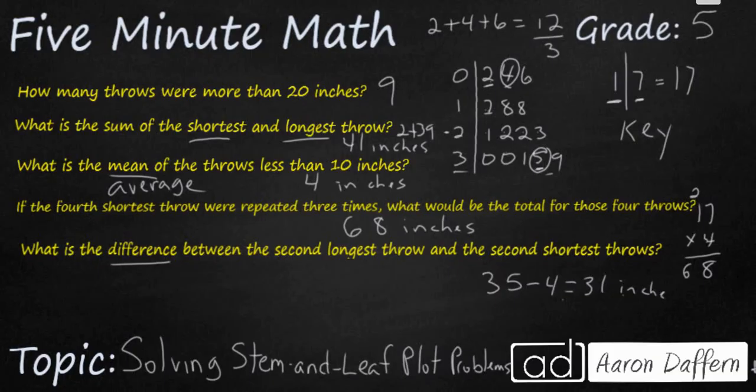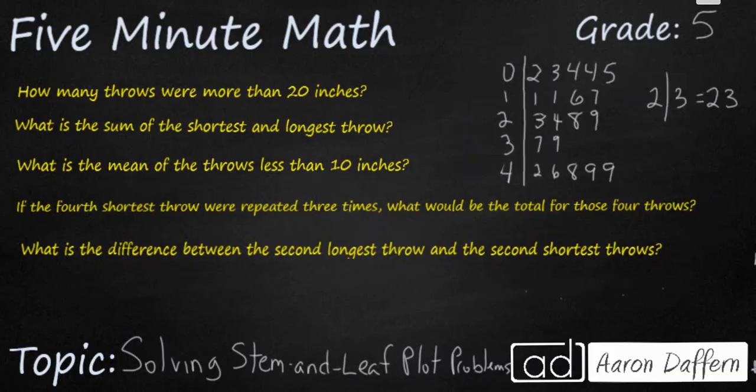And now it's time for you to try. We have the same questions for your practice roll, but a new stem and leaf plot. Make sure you keep track of our key over here. 2 on the vertical line, 3, that equals 23. When you have your answers, unpause your video and check your work.